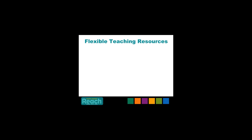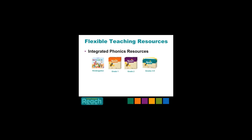Your district might have purchased additional resources to support phonics and newcomer instruction. Our integrated phonics resources deliver systematic and scaffolded instruction in phonemic awareness, phonics, and high-frequency words. The Alpha Chant Kit is for use at the kindergarten level. There is also a Reach Into Phonics Kit for Grade 1, Grade 2, and Grades 3 through 5. For newcomers, the In the USA Kit for students in grades 2 through 5 is designed to develop essential language and literacy skills, including beginning language, survival vocabulary, and the basic building blocks of literacy for newly arrived and pre-literate students. Recorded webinars are available for each of these tools.